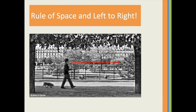Then there is the rule of space and from left to right. This is a basic rule telling you to leave space for your subject to walk in or a space to look away. In Western culture, we read from left to right so our eyes are more comfortable with subjects moving from left to right in our images. Photographers in the Middle East preferred their models to enter from the right-hand side and walk from right to left. So different cultures might have different preferences when it comes to composition — something to keep in mind.